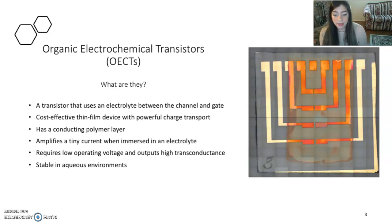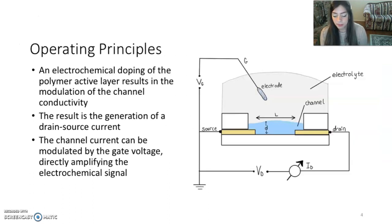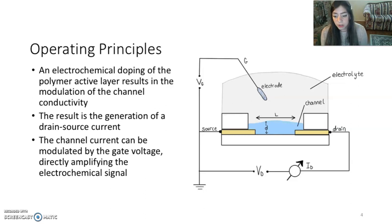A defining quality that makes an OECT unique is that it's stable in aqueous environments. We can augment them to be compatible with human tissue, which opens doors to many biological applications. An OECT can also act as a transducer by detecting a change in electrochemical potential. The device mechanism operates by the electrochemical doping of the polymer active layer, resulting in the modulation of channel conductivity and the generation of a drain-source current.